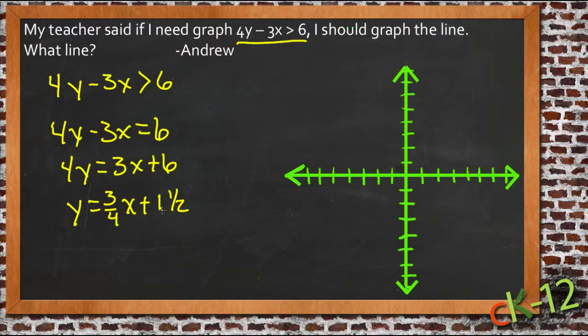So we know that our y-intercept is at 1 and a half. So there's a point right here. And that our slope is 3 fourths. So it's rise 3, run 4. So we have 1, 2, 3, and then over to 4. So we have a point right here.